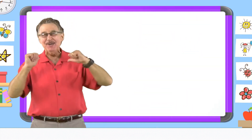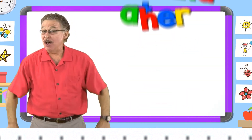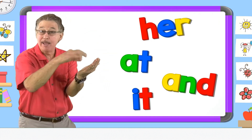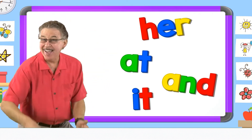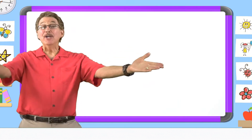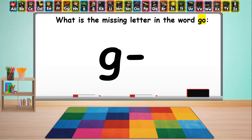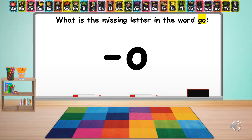I know lots of sight words. They help me read and write. We learned the sight word go. What is the missing letter in the word go?